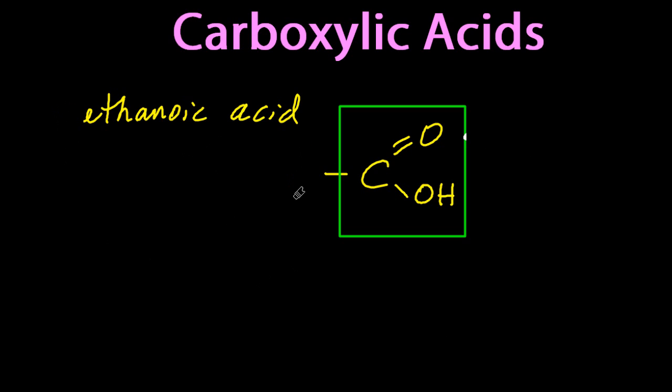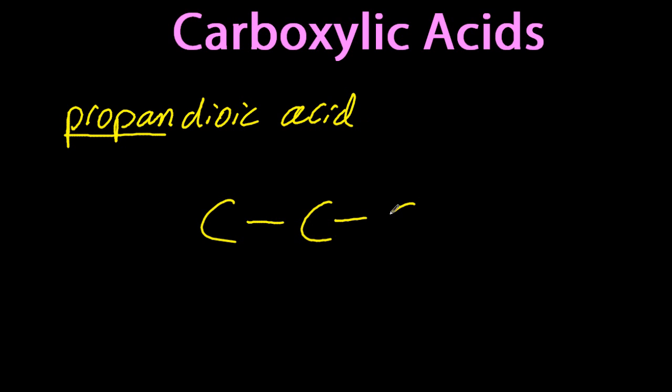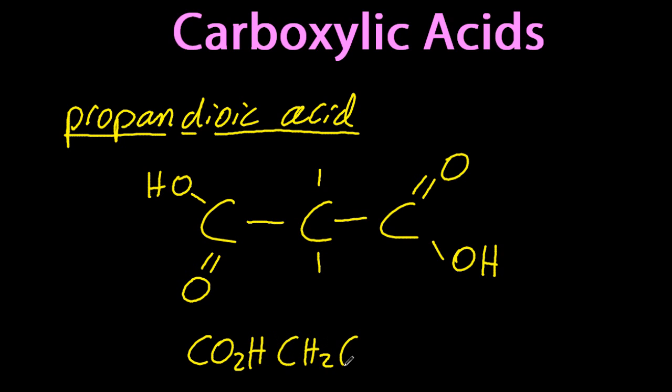And for ethanoic acid, well that's the next one. I'm going to put a CH3 there. Now what about propanedioic acid? I put the two functional groups. They only fit at the ends, the functional group for carboxylic acid. And if I wanted to write out the condensed formula, try to stick to CO2H. That's the preferred way of writing it. You could try and be a bit clever and put HO2C, but CO2H is specifically mentioned in the syllabus.